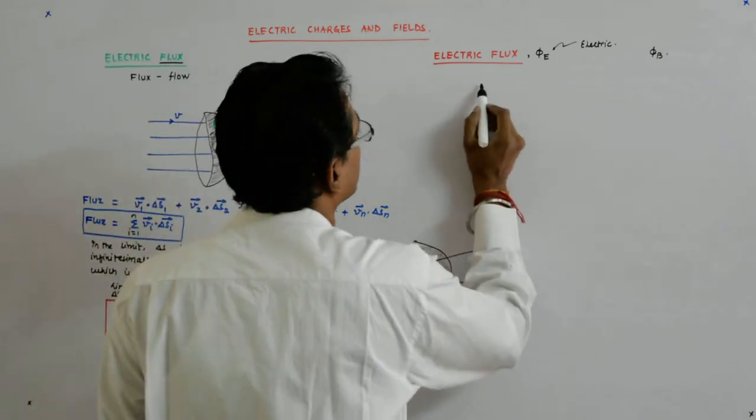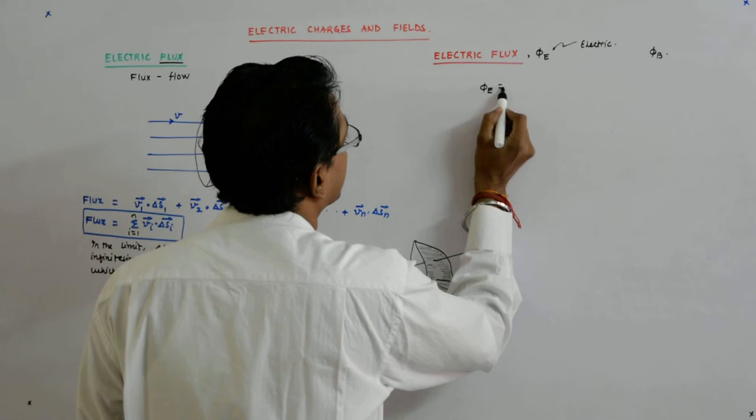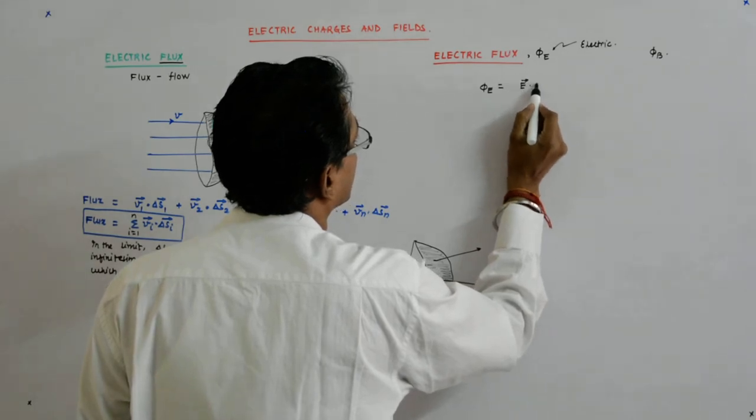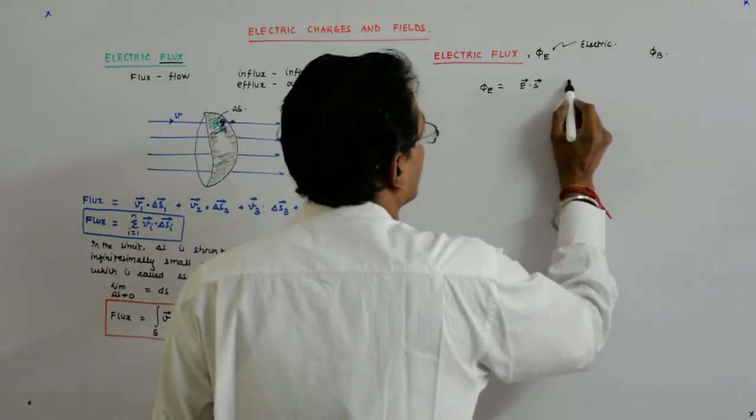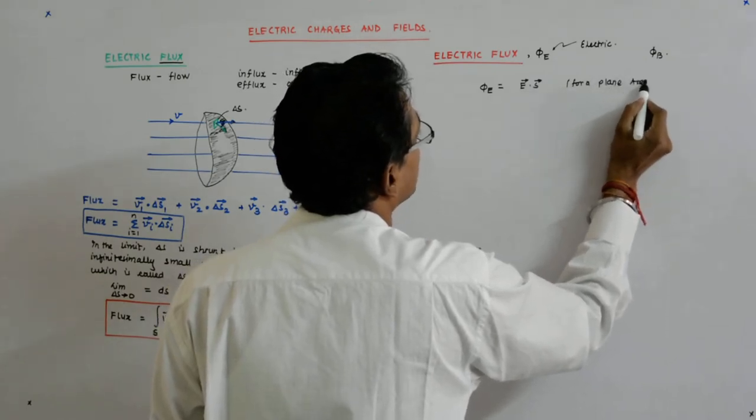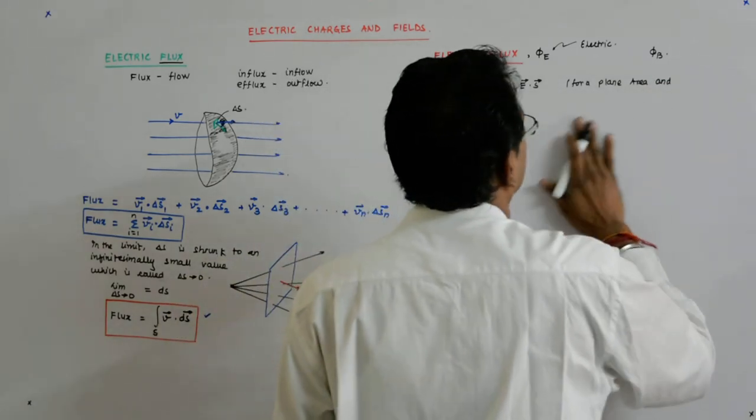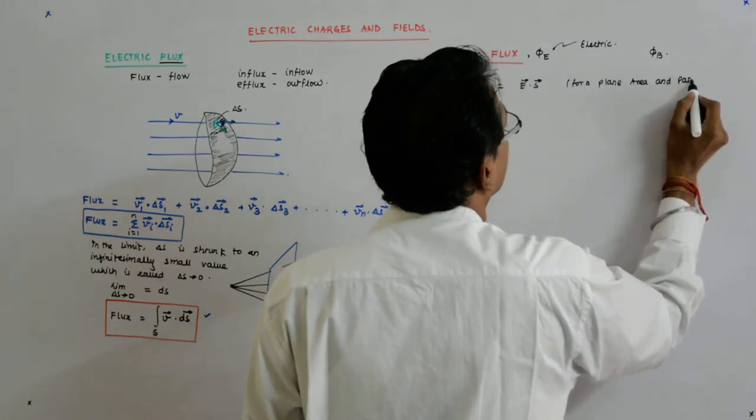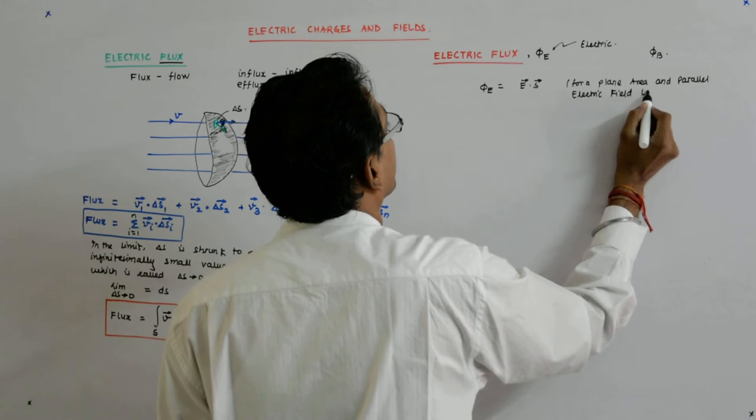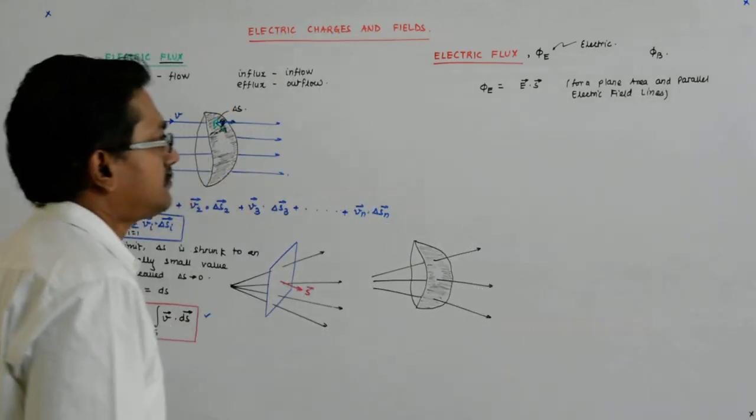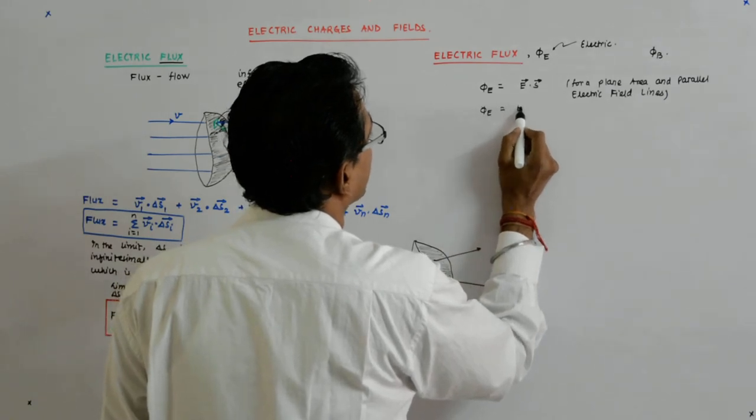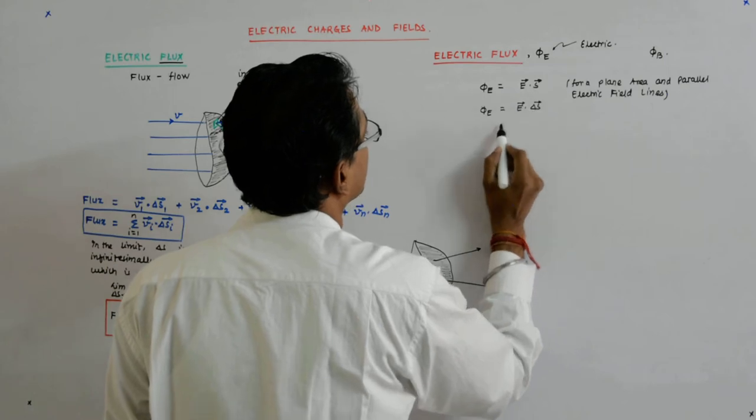So Phi E is nothing but E dot S for a plane area and parallel electric field lines. But we know that otherwise it is E dot delta S...